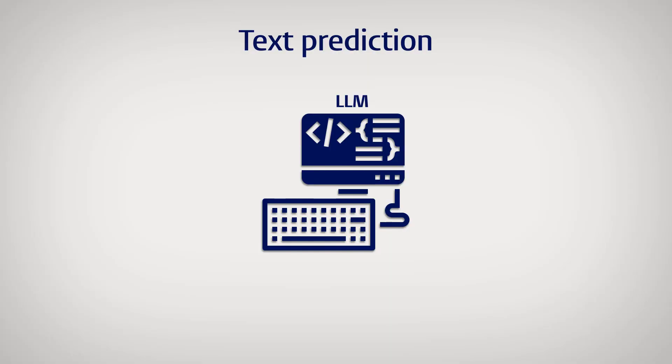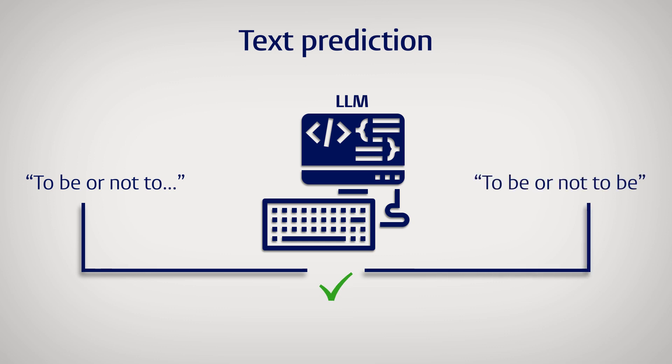What is text prediction? Well, suppose that I say to be or not to. It's easy to predict what my next word will be. To be or not to be. Of course, most sentences can be continued in multiple ways.